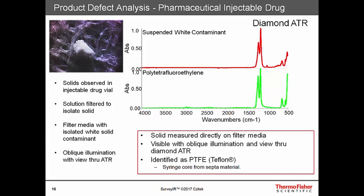Another pharmaceutical example involved suspended particles in an injectable pharmaceutical. On the upper left, we observe one of these particles on filter paper from which the particles were filtered — a white particle on the surface of a cellulose-based filter paper, imaged with oblique illumination through the diamond ATR crystal. The spectrum of the contaminant shown in red in the upper right correlates very well to polytetrafluoroethylene, also known as Teflon. The SEPTA material in the injectable drug was composed of Teflon, and it's believed some of the SEPTA material contaminated the injectable pharmaceutical.